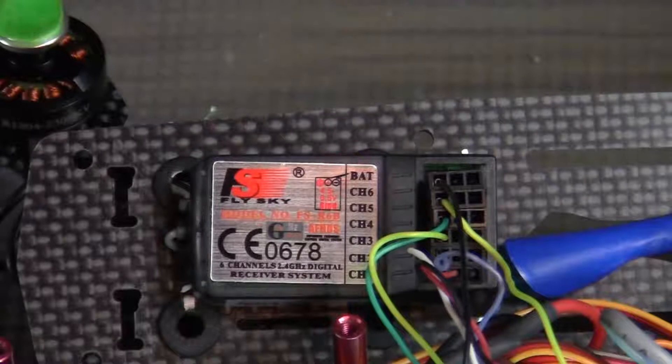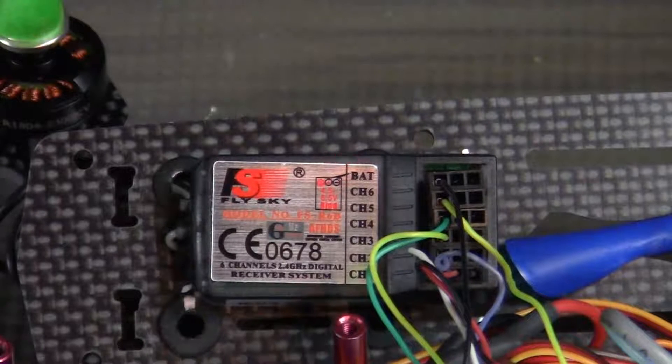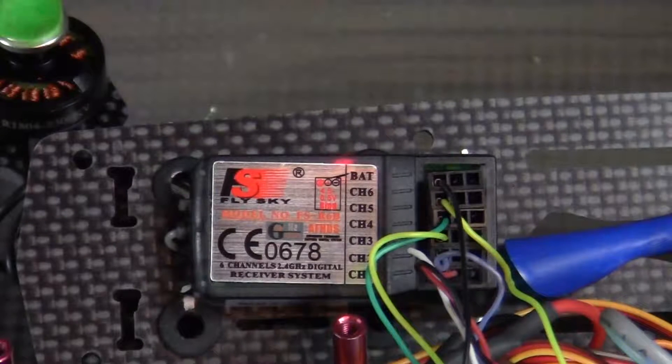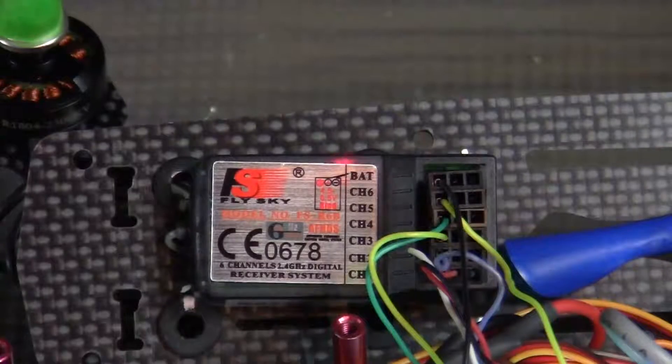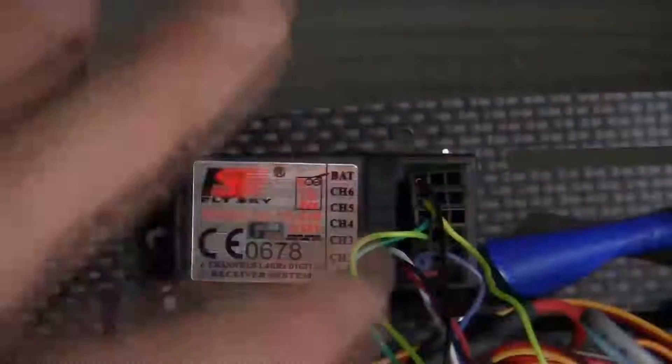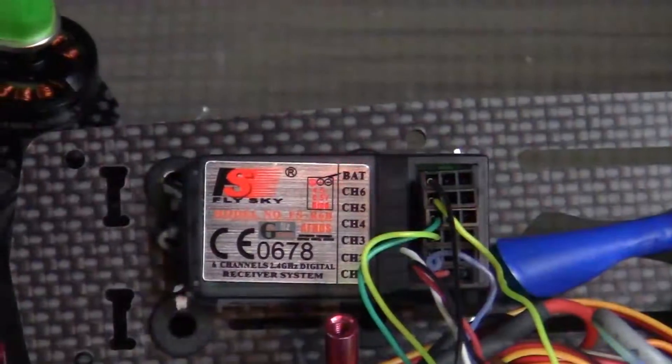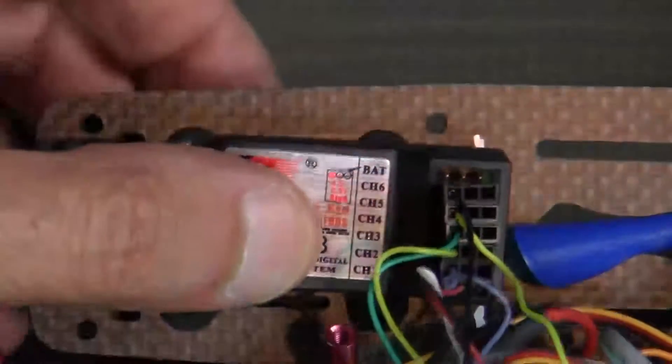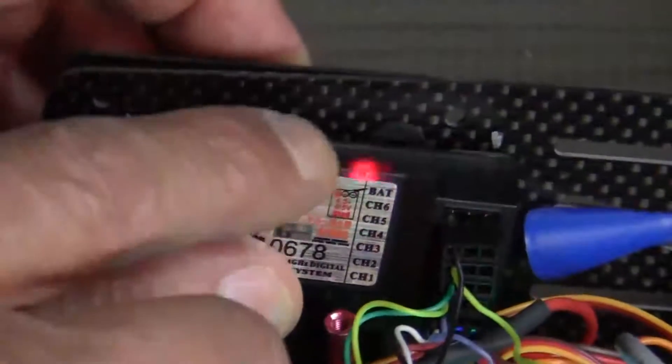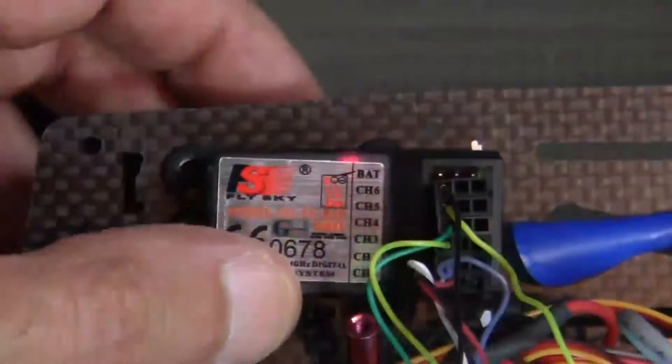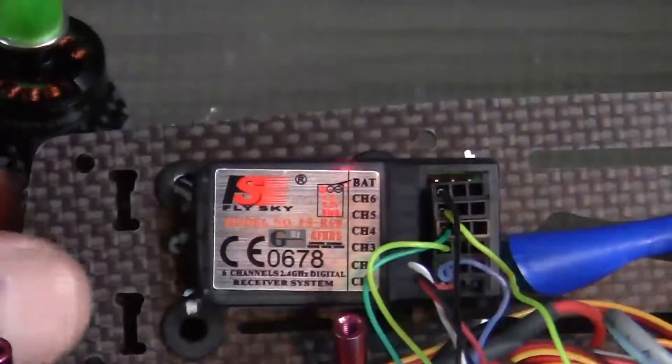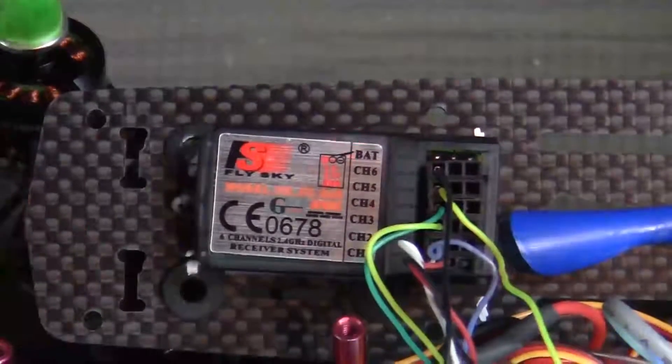In order to bind your Flysky transmitter with your Flysky radio receiver, the first thing we want to do is put some power to our system. Then you'll notice if the radio is turned on and this LED light is flashing, that means your radio and your transmitter are not bound together.